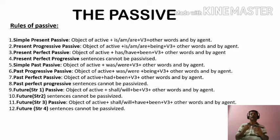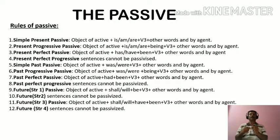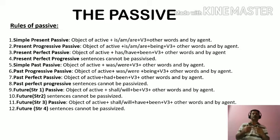Present perfect progressive sentences cannot be passivized. Now the fifth one, that is simple past passive. The rule is: the object of active plus was or were plus V3 plus other words and by agent.